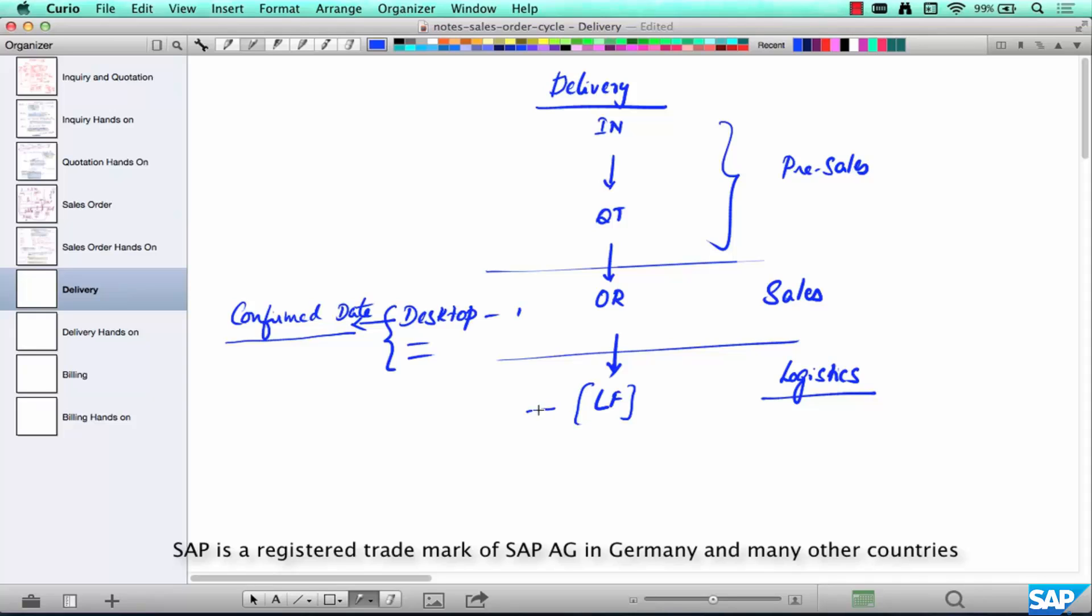Make sure that the date you are trying to create the delivery is the date the goods are confirmed by. That's called the delivery creation date or the delivery date.